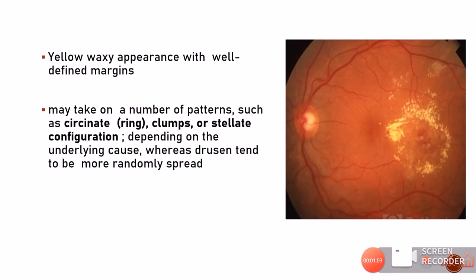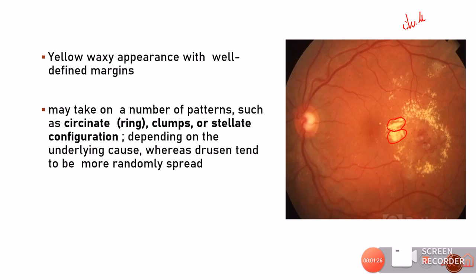On fundus photographs, hard exudates have a yellowish waxy appearance. Compared to drusen, which appear more dull, hard exudates are wax-like, yellowish-colored lesions with well-defined margins. The key descriptor is their waxy, glistening appearance.